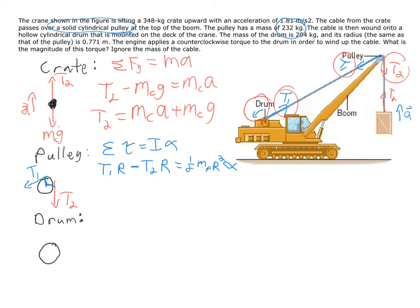One of the tricks though—what's alpha? If we're trying to find T1 to finally get to the torque on the drum, we need to know alpha. Well, we know that the acceleration of the crate will be the same as the acceleration of the cable. So for the cable, the acceleration is going to be equal to alpha times R, or alpha is going to be equal to the tangential acceleration of the cable over R, and the tangential acceleration of the cable is just equal to the acceleration of the crate.